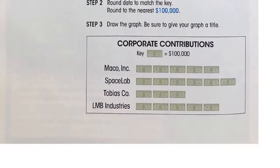So they have a key, a title, and then instead of numbers, we just have images of money, representing how much each of these corporations gave in contributions to something.